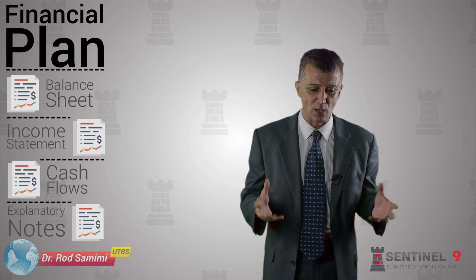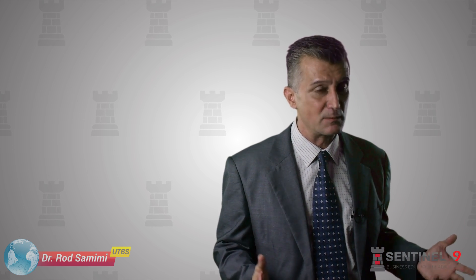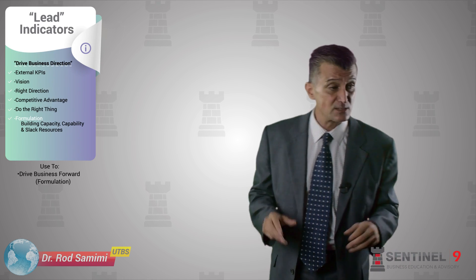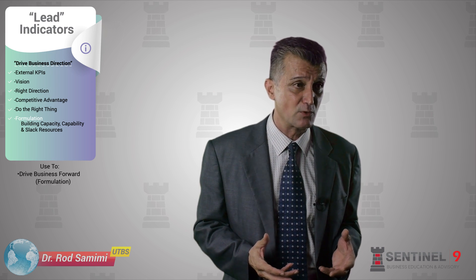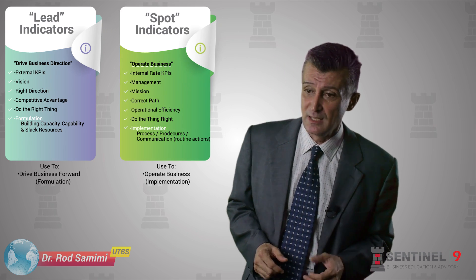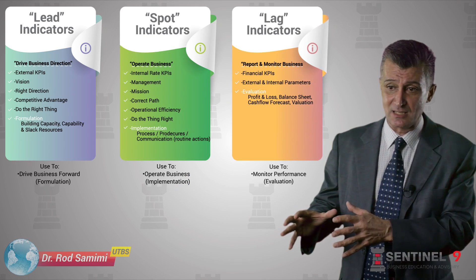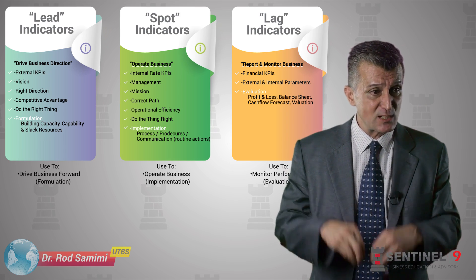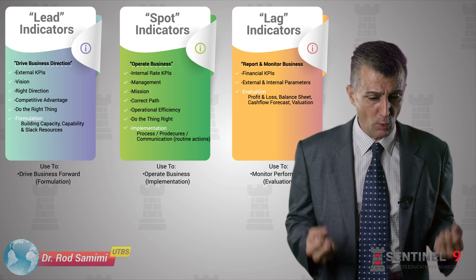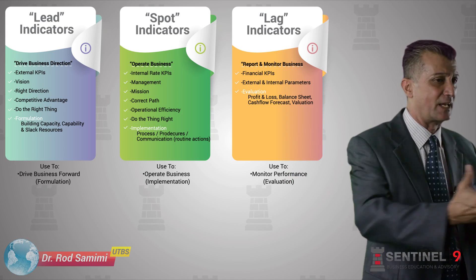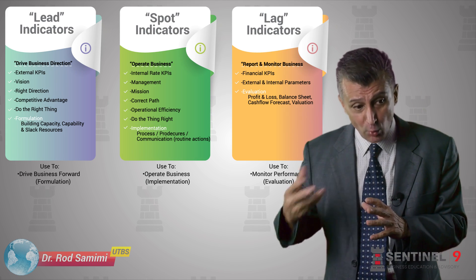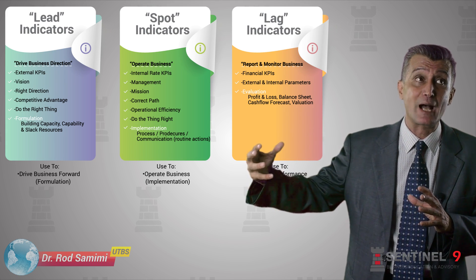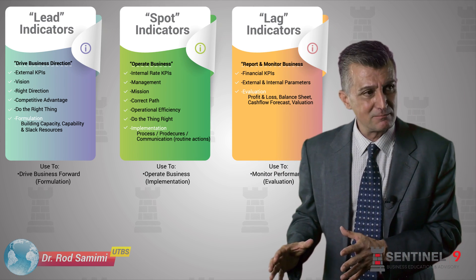Let's look at the different types of indicators used for evaluation. There's a group called leading indicators. There's another group called spot indicators. And there's a third category called lagged indicators, which apply particularly to evaluation. They're called lagged indicators because they are of a reporting nature — they convey what happened. We forecast them not as leading indicators of what we expect to happen, but then we look back and see where we actually ended up.